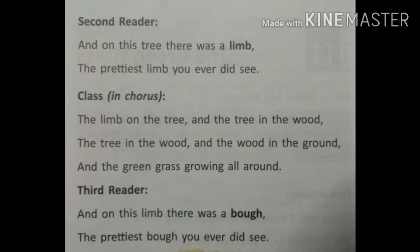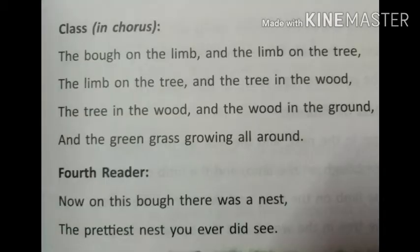Third reader: 'And on this limb there was a bough, the prettiest bough you ever did see.' The third reader was saying that from the trunk of the tree there were many branches coming out and they were also beautiful. Class in chorus: 'The bough on the limb, and the limb on the tree, the limb on the tree and the tree in the wood, the tree in the wood and the wood in the ground, and the green grass growing all around.' The whole class sang in praise of the tree with its trunk, branches, and green grass.